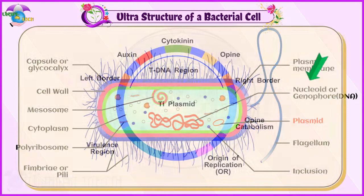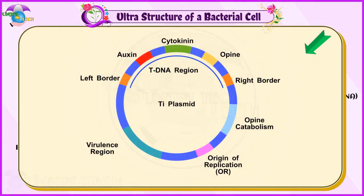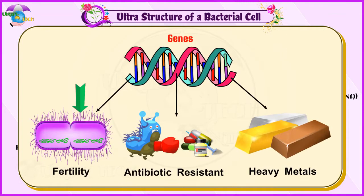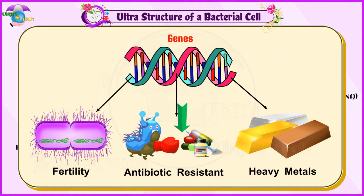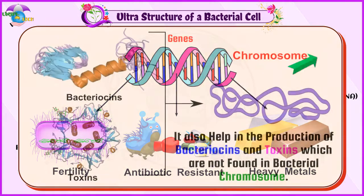Plasmids: Plasmids are extra-chromosomal, double-stranded, circular, self-replicating, autonomous elements. They contain genes for fertility, antibiotic resistance, and heavy metals.